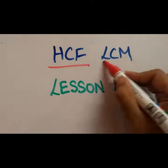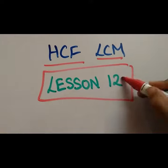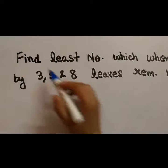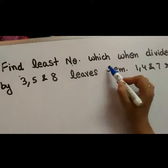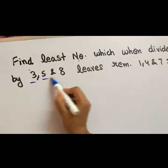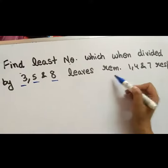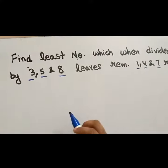At CFLCM lesson 12. Find least number which when divided by 3, 5 and 8 leaves remainder 1, 4 and 7.